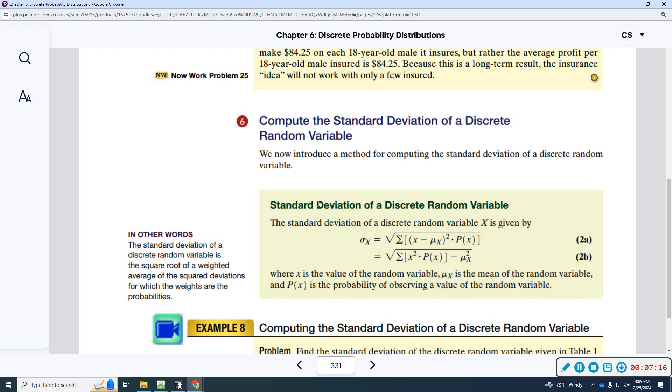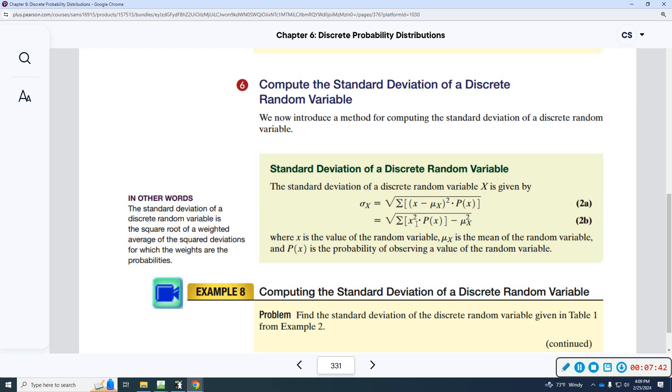The standard deviation of a discrete random variable is going to be given by this formula. Sigma is going to be equal to the square root of each X value minus the mean, the expected value. You're going to square that and then you're going to multiply that times the probability. You're going to add all those up and then you're going to take the square root of all of that. Here's another one. You do the X squared times the probability of X. And then you would subtract the whole mean squared and you do the square root of that. This is the one that I would prefer. It's almost like finding the mean except you're squaring the X values and then adding them all up. And you're just going to subtract the mean from that, the mean squared.